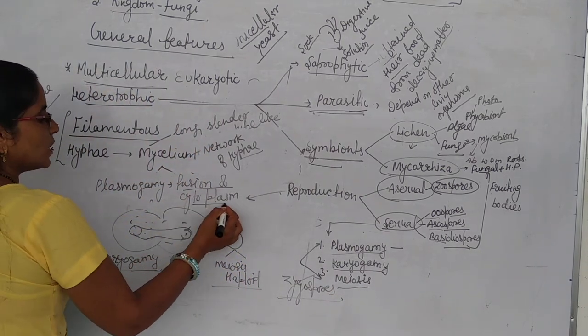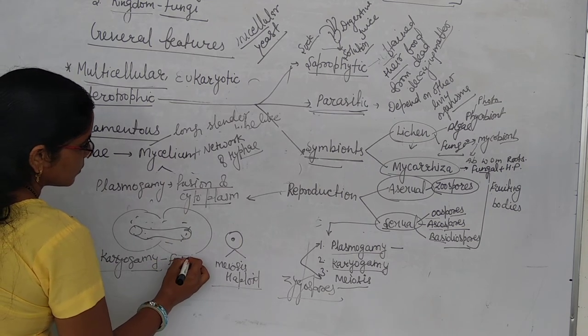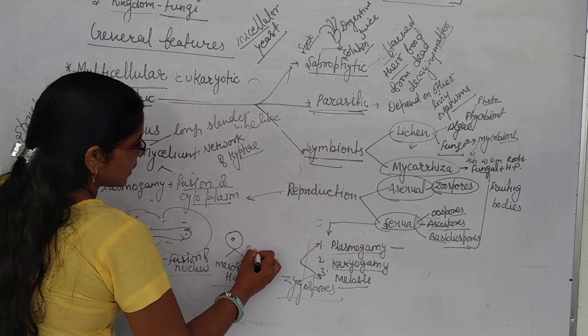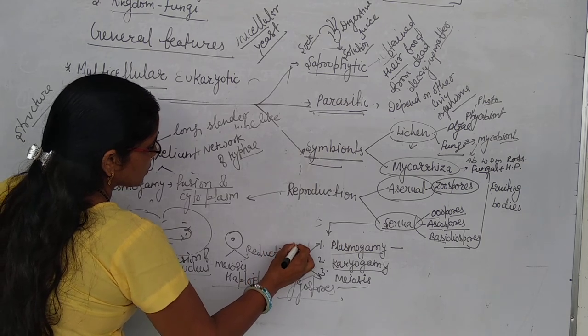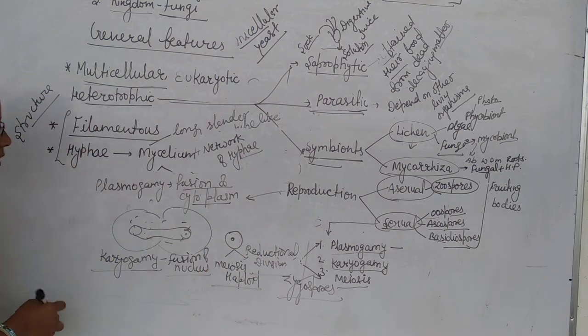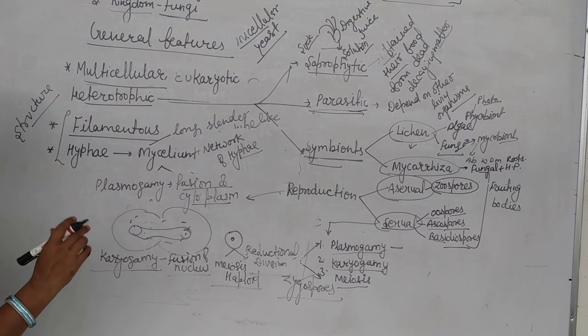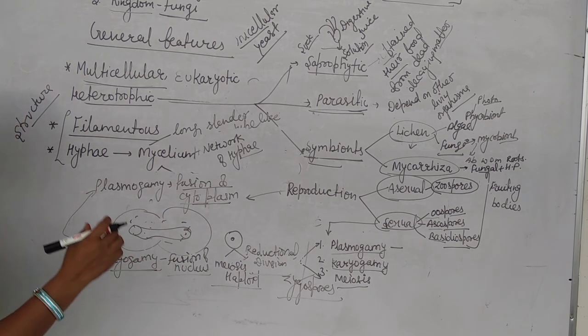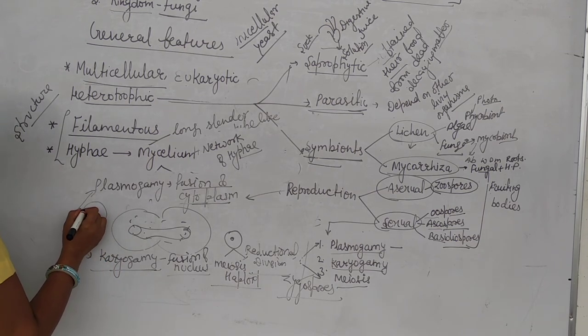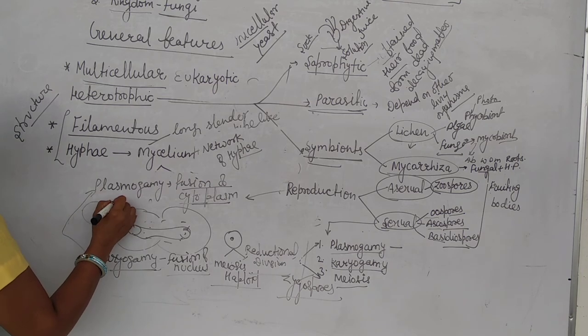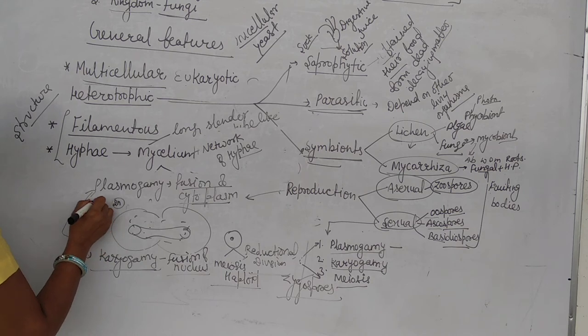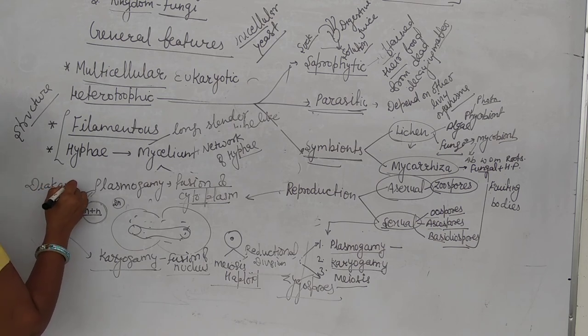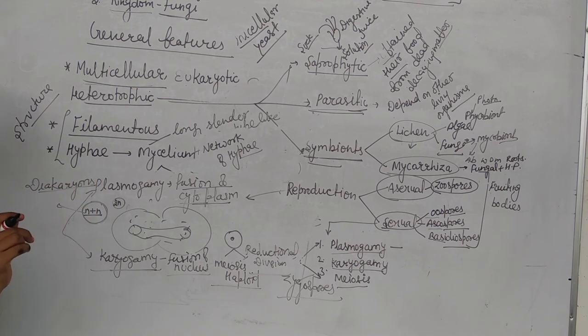Meiosis is the reductional division that produces haploid spores. In some fungi, there is an intervening stage, an intermediate stage between plasmogamy and karyogamy. After plasmogamy, karyogamy happens after some time. What happens? After cytoplasm fusion, when two nuclei combine you might think it becomes 2N, but before becoming 2N there is an N plus N stage. This is not fully fused - this stage is called dikaryotic or dikaryotic phase.